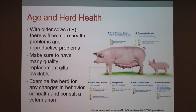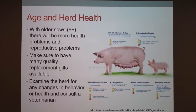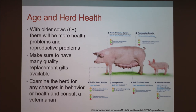As for aging herd health, obviously the older the sow gets, generally her reproduction and overall health decline. You want to look at your herd and notice any changes — things like mange can spread fast and need to be addressed. Make sure you have quality replacement gilts coming in if your herd is aging. Always examine your herd for any changes in behavior or health, and consult with your veterinarian as needed.